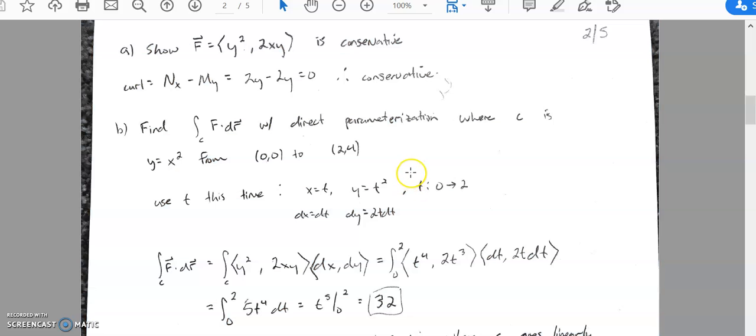Okay, so you should see here that I get 32. I use t this time just to demonstrate how to use a different variable. You could totally use x as well. X is t, y is t squared, t travels from 0 to 2.